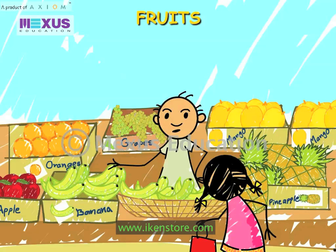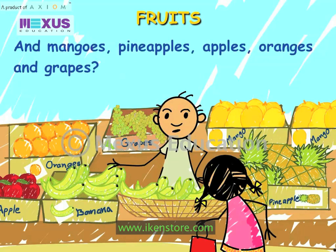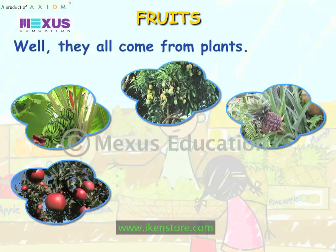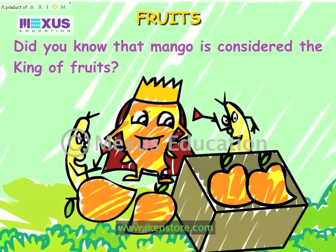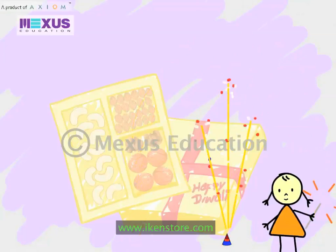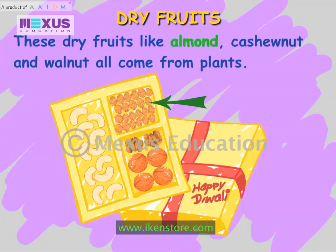Fruits. Where do bananas come from before they reach the market? And mangoes, pineapples, apples, oranges and grapes — they all come from plants. Some plants give us fleshy and juicy fruits. Did you know that mango is considered the king of fruits? At Diwali time, many people give us boxes with dry fruits. These dry fruits like almond, cashew nut and walnut all come from plants.